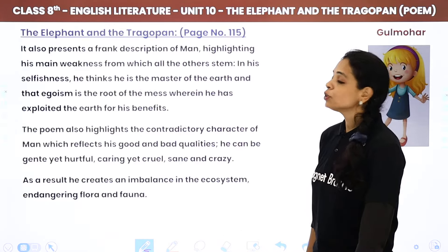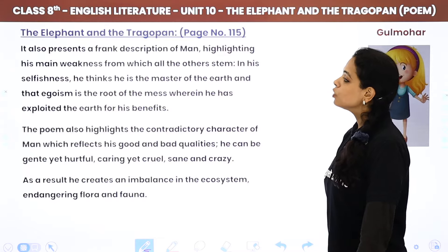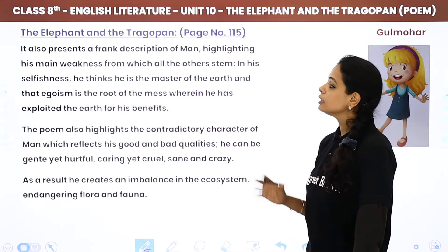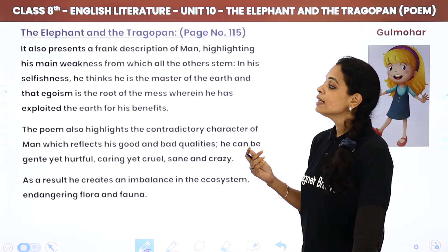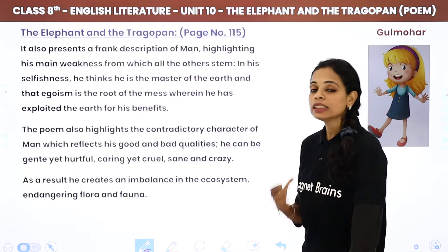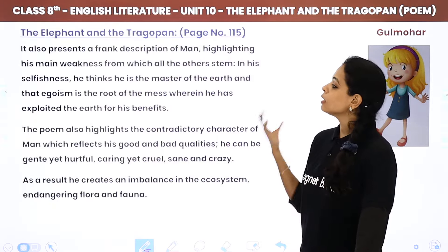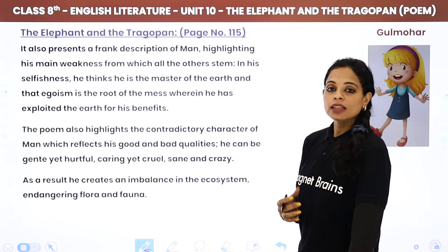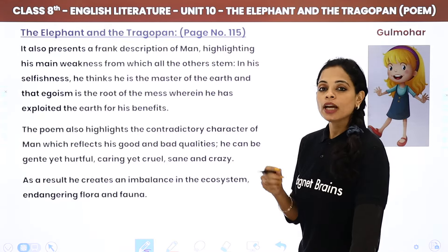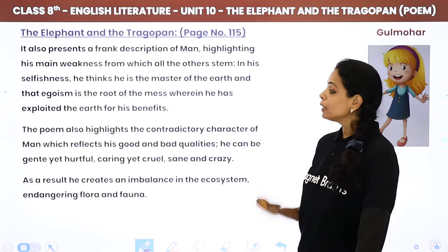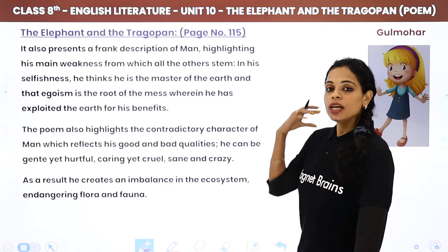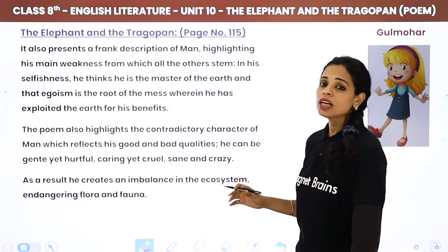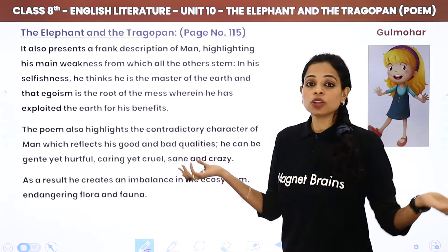It also presents a frank description of man, highlighting his main weakness from which all the others stem. In his selfishness, he thinks he is the master of the earth and that egoism is the root of the mess — wherein he has exploited the earth for his own benefits. He feels the entire planet is his owned property, and his ego is the root of the problem.